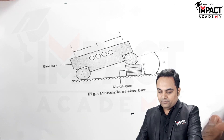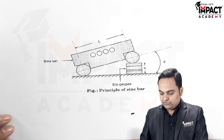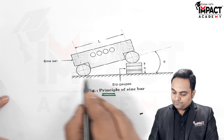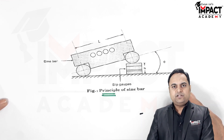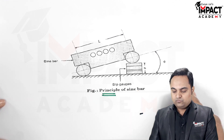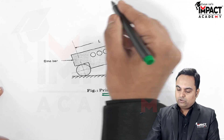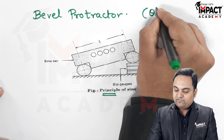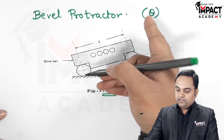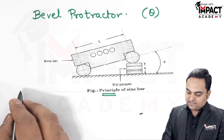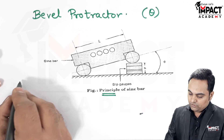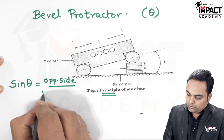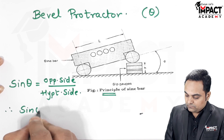Here is the diagram showing the application or principle of a sine bar. Suppose this is the surface of the workpiece whose angle we have to check. First, using another instrument called the bevel protractor, the angle theta can be found out roughly. Once this angle theta is known, the sine bar uses the trigonometric formula: sine theta equals the opposite side upon the hypotenuse side.